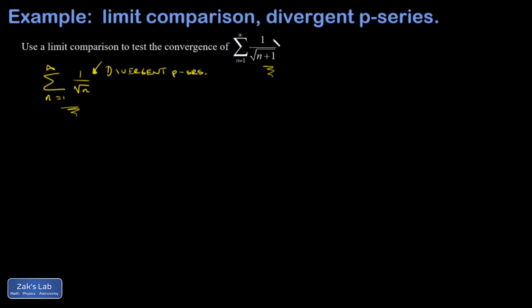And the idea here is that I'm essentially looking at one over root n. When n becomes large, that one becomes a negligible correction. So I do think this thing is going to diverge because its behavior is captured by this one over root n series. So we're going to look at a ratio of the terms in our series to those in this divergent p-series.